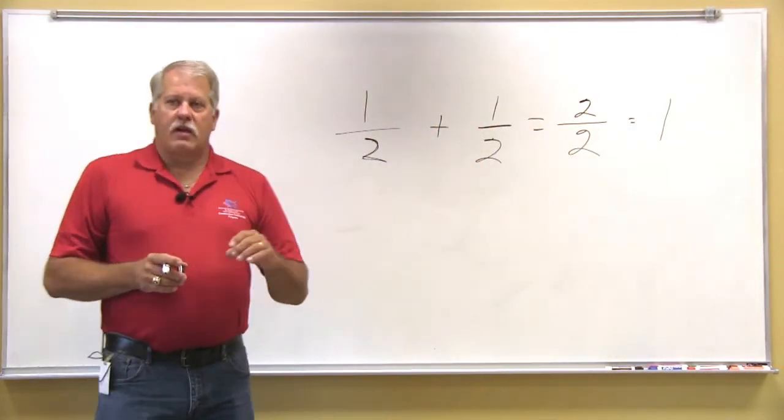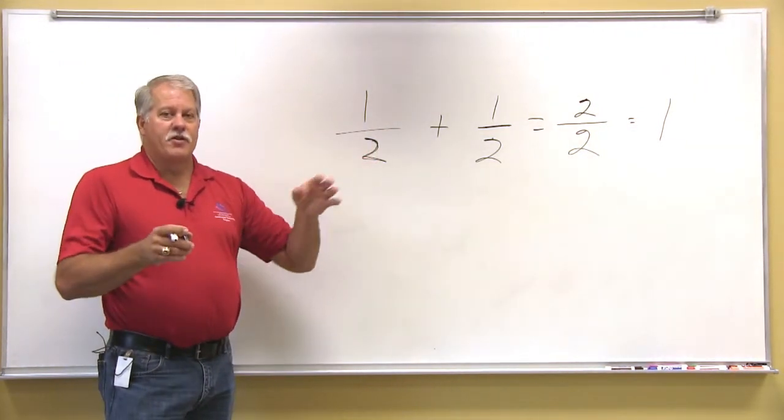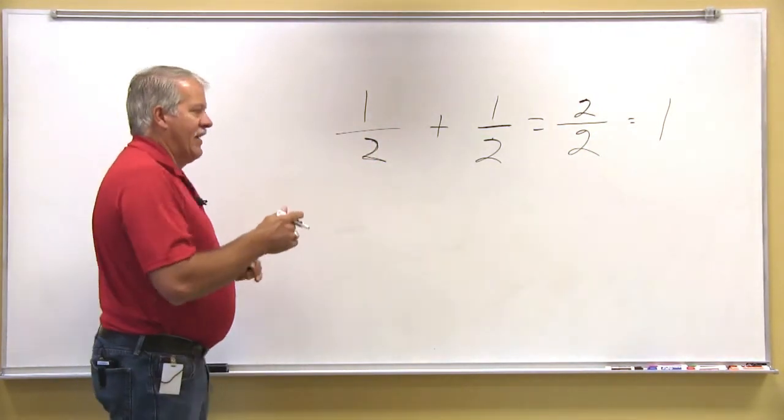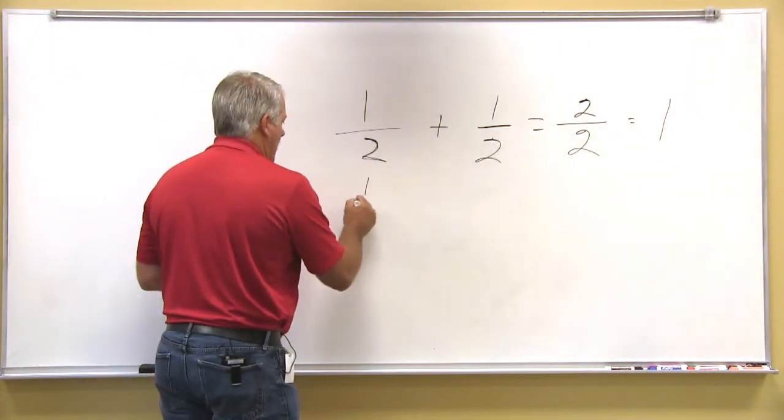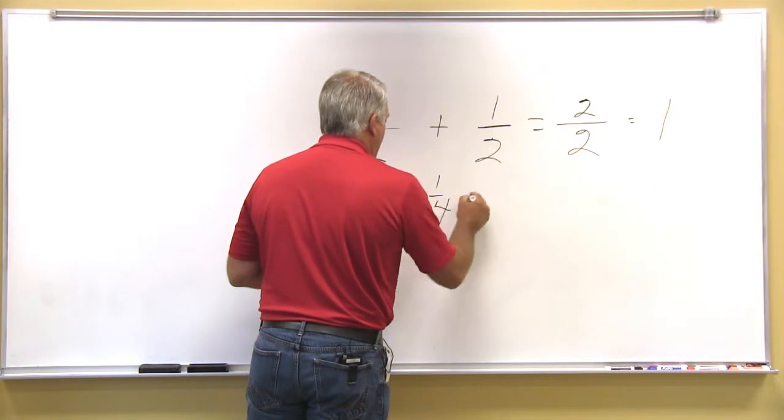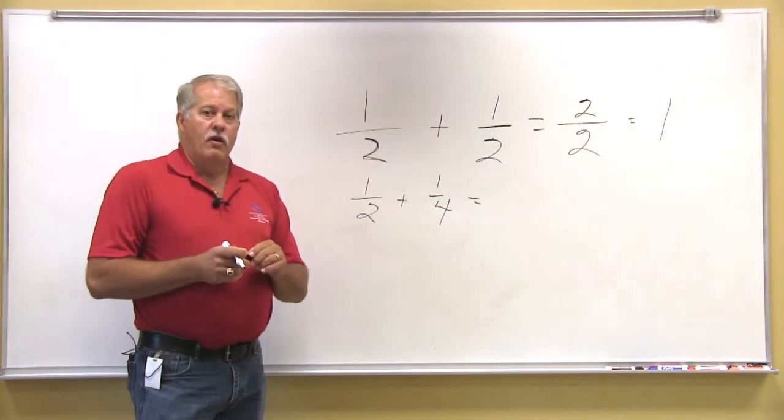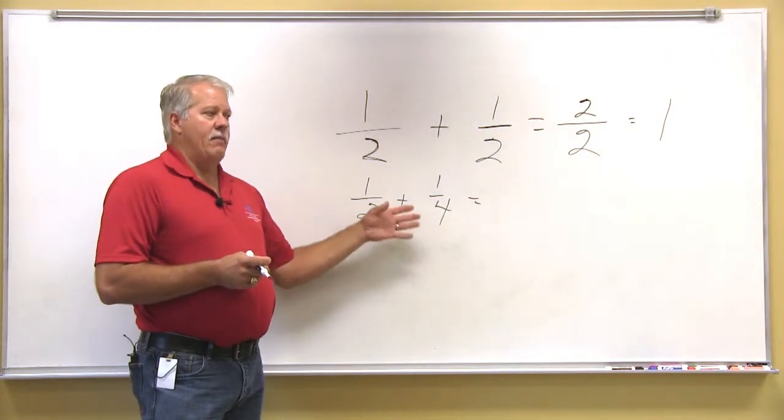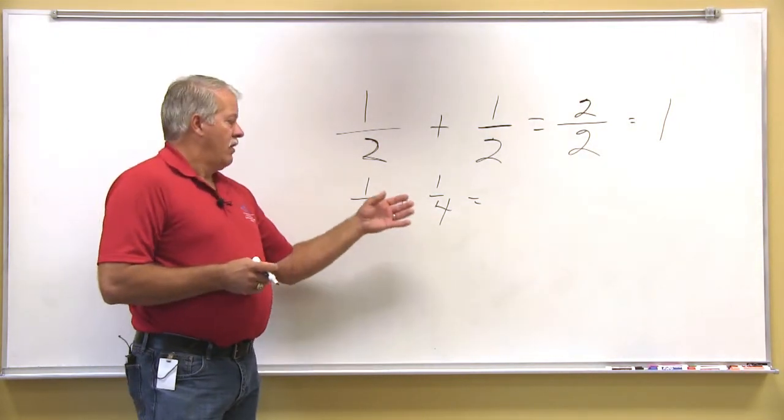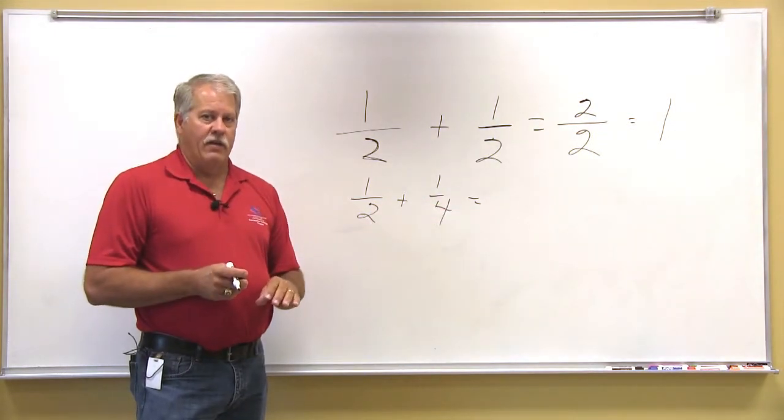When you think about this particular principle, you need to think of apples and apples, oranges and oranges. In the next example, if we have 1 half plus 1 fourth, there are two totally different numbers. We have to make sure the denominators are the same. This could be classified as an apple, this is an orange. You can't add the two together.